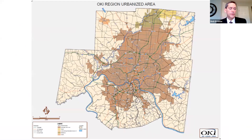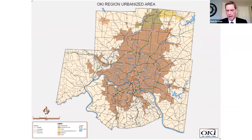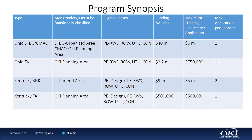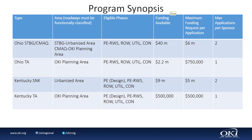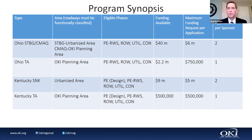Here is a map showing the urbanized area — anything in brown, as well as the Oxford area and the Hamilton-Middletown area. There's a portion that's part of the Dayton urbanized area up in Warren County (yellowish color) — we don't accept STBG applications for that area; those applicants need to go to the Dayton NPO. On cost estimates: provide them in current-year dollars with a 10% contingency. We will apply the inflation factor using ODOT and/or KYTC's inflation factor information.